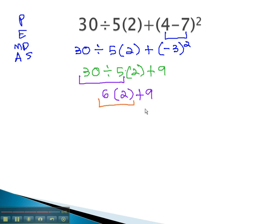Still multiplying...6 times 2 is 12, plus 9. And finally, the addition to finish off the problem. 12 plus 9 is 21. And that completes the problem.